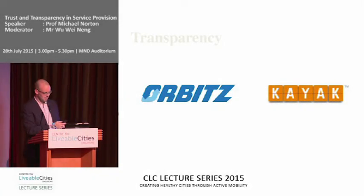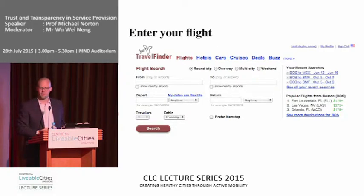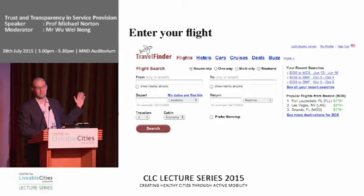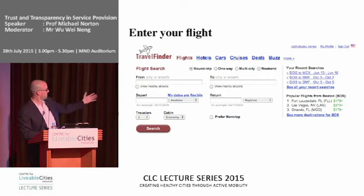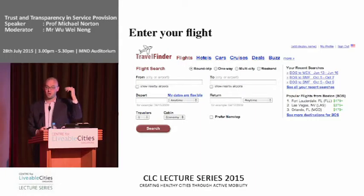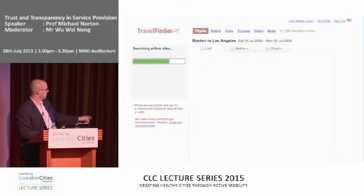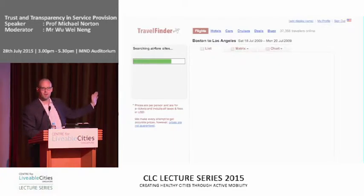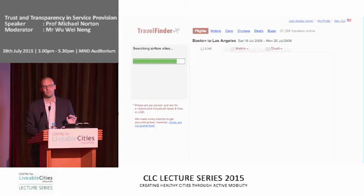We created our own travel website to test this — we called it Travel Finder, because we're not very creative, and we drew that little plane, which we were super happy about because that's the limits of our artistic skills. It's just a simulated travel website where people search for flights with the same interface as every other website: where do you want to go, search for a flight. But then we randomly assign people to see different versions of the search process. Some people got to see what we call the blind version — it's like Orbitz, just a search bar with a progress bar that slowly fills up, and then when it's done you see a bunch of flights. That's the boring one, but that's business as usual for most websites.